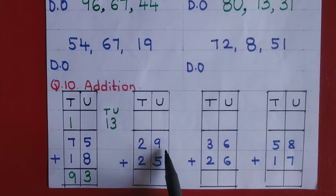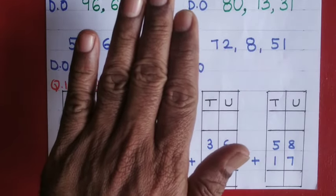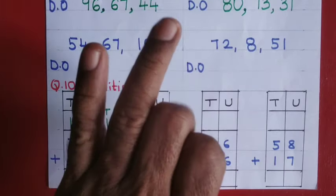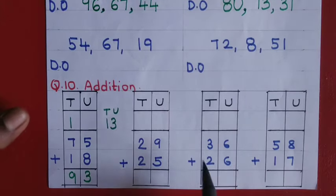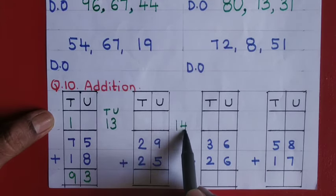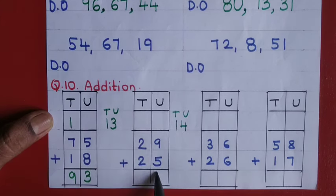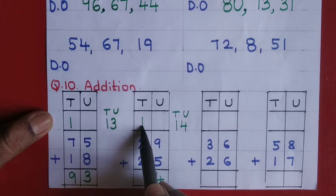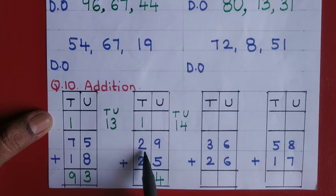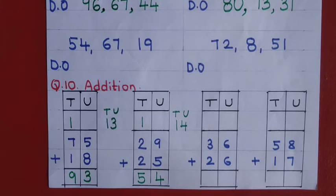Twenty nine plus twenty five: keep nine in mind, count five fingers — ten, eleven, twelve, thirteen, fourteen. Write fourteen here. Four in the units place, carry one ten. One plus two is three, three plus two is five. The answer is fifty four. The remaining sums you can do on your own.